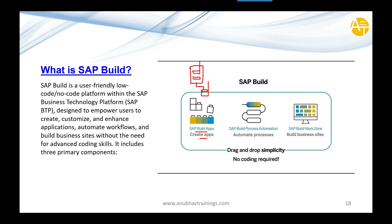The second part is called SAP Build Process Automation, which is used to automate any business process. If you have a business process spread across multiple users and multiple departments, you can define and design that process graphically using drag and drop — no coding skills required.